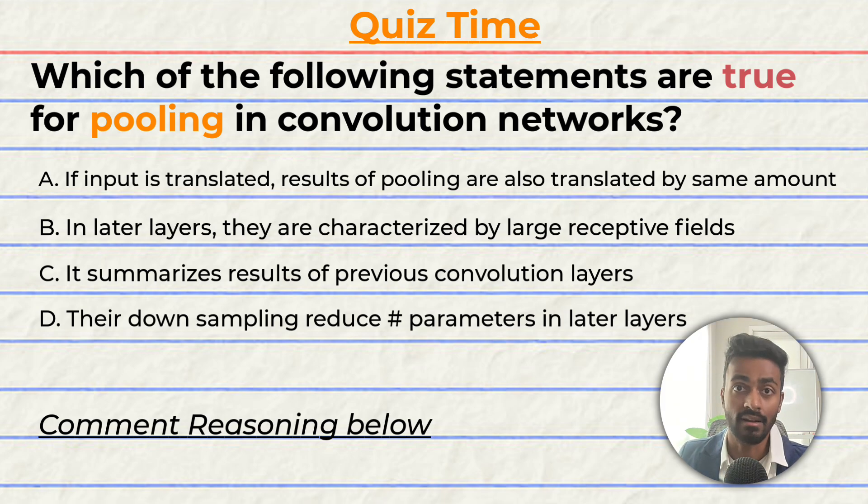Quiz time! Have you been paying attention? Let's quiz you to find out. Which of the following statements are true for pooling in convolution networks? A. If the input is translated, the result of pooling is also translated by the same amount. B. In later layers, they are characterized by large receptive fields. C. It summarizes results of previous convolution layers. Or D. Their down sampling can reduce the number of learnable parameters in later layers. Note that multiple options here may be correct and I'll give you a few seconds to answer this question.